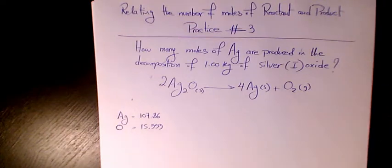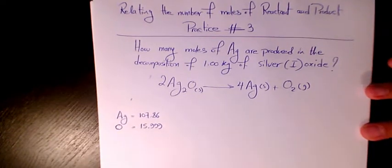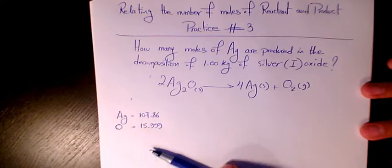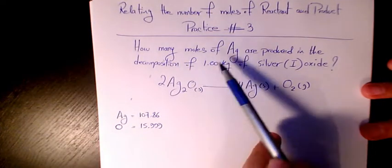What's up guys, this is Masi. Welcome to my channel. This is the third video regarding relating the number of moles of reactants and products, and that's related to stoichiometry. This question is asking how many moles of Ag are produced in the decomposition of 1 kg of silver(I) oxide.